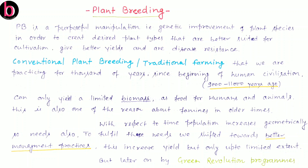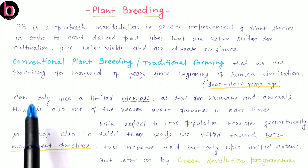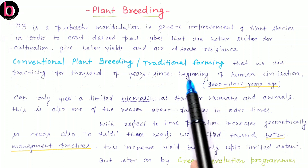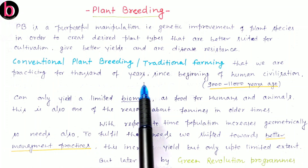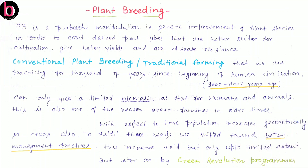By plant breeding we are trying to create such type of plants which are according to our needs — plants which can easily grow, with maximum productivity or quality productivity, and high resistance against any kind of infections. Conventional plant breeding, or traditional farming, is the term we use for agriculture. We have been practicing it for thousands of years since the beginning of human civilization, that is about 9000 to 11000 years ago.